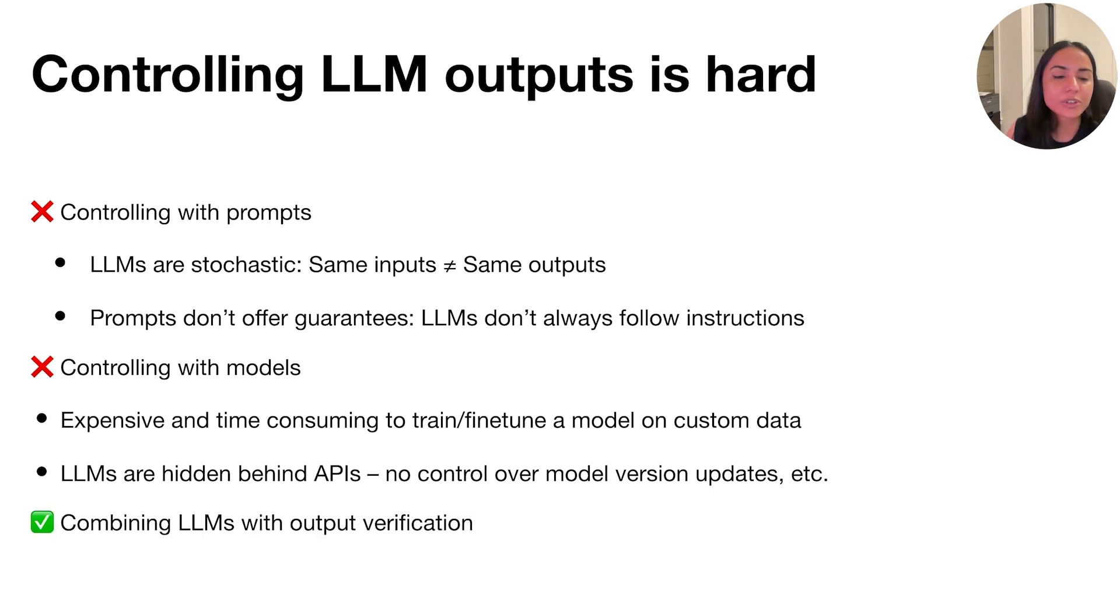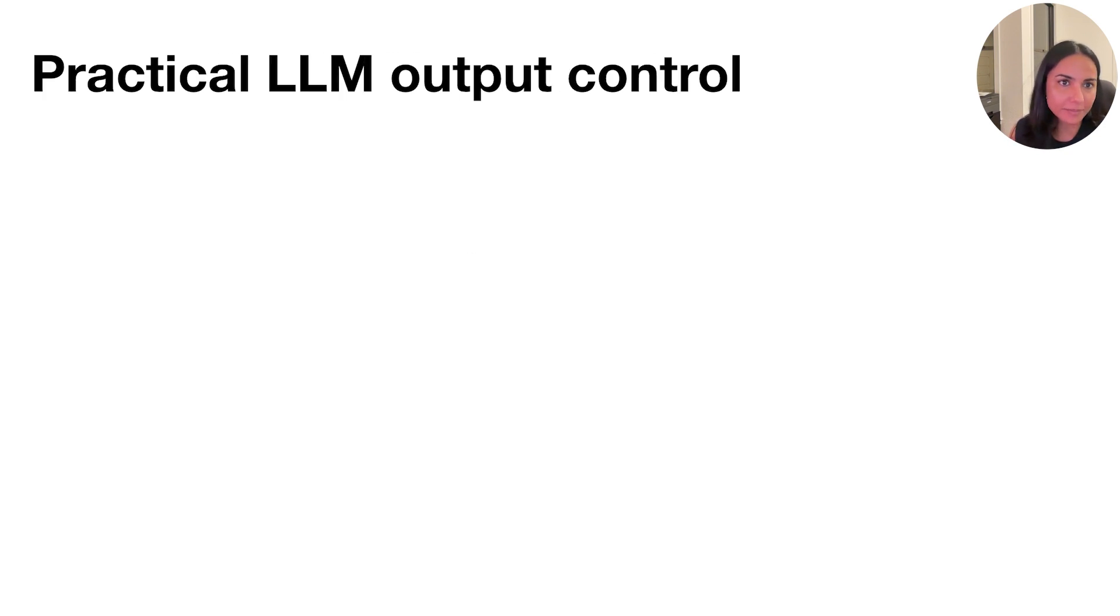A third utility, which often ends up being very useful and very practical, is combining an LLM with an output verification system and using this combination as a way to enforce control over the LLM outputs. So what this means is that we can build application-specific checks and verification programs that ensure that the LLM output is correct for some context.